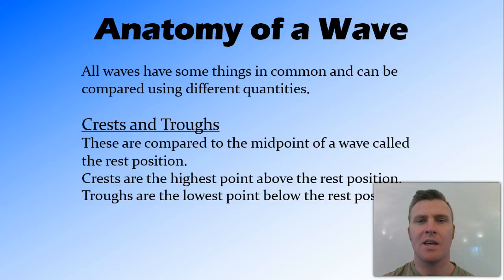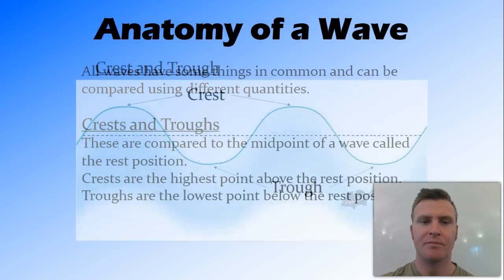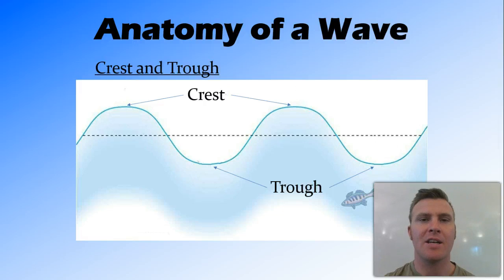So the first thing that we need to identify are the crests and the troughs. The crests are the highest point of the wave above the midpoint, and the troughs are the lowest point below the midpoint. The midpoint is the point at which the medium would be if nothing was occurring. So you can imagine here, if it was a still day and there weren't any waves, the midpoint would be the dotted line.